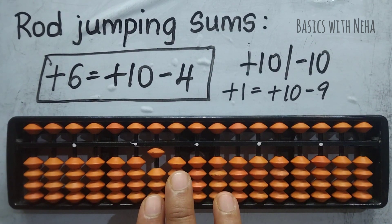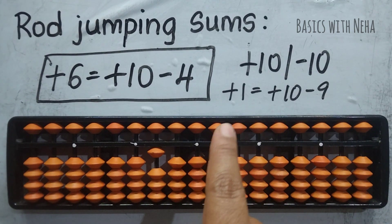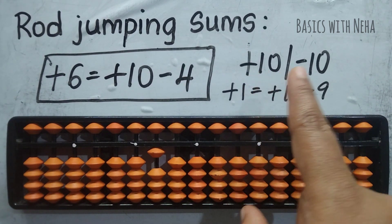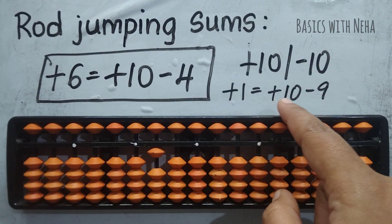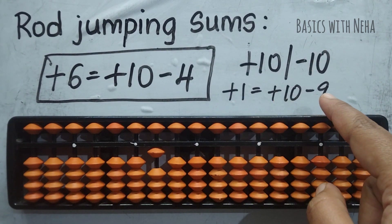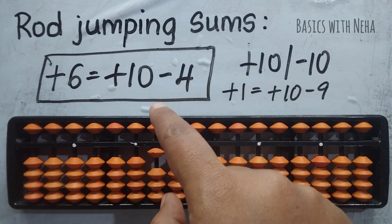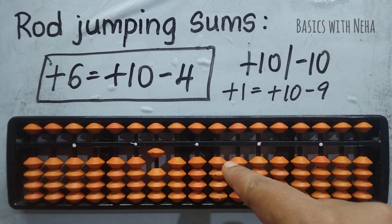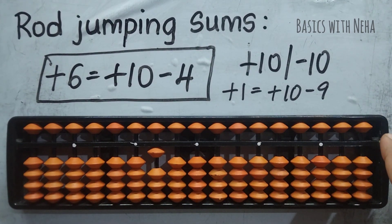Practicing this will really help you and reduce your learning time in Abacus. This is one of the important concepts which most institutes will not teach. In your learning phase, you will learn it just by using the formulas, and this can be a very big confusion at first. But once you are used to the rod jumping method, it is very easy. Let's get started with a few sums.